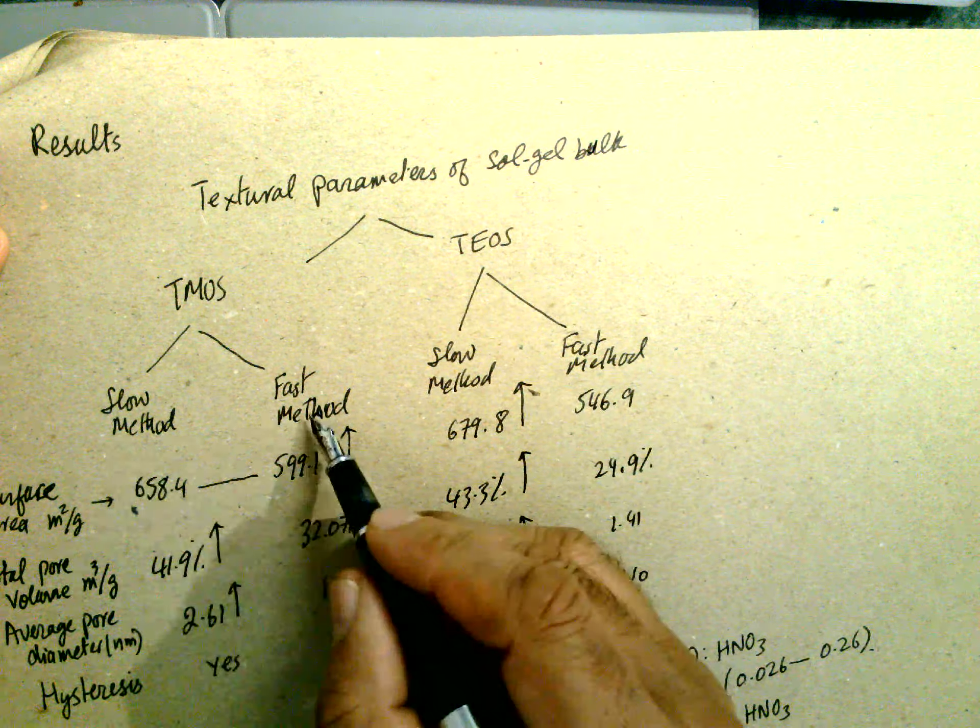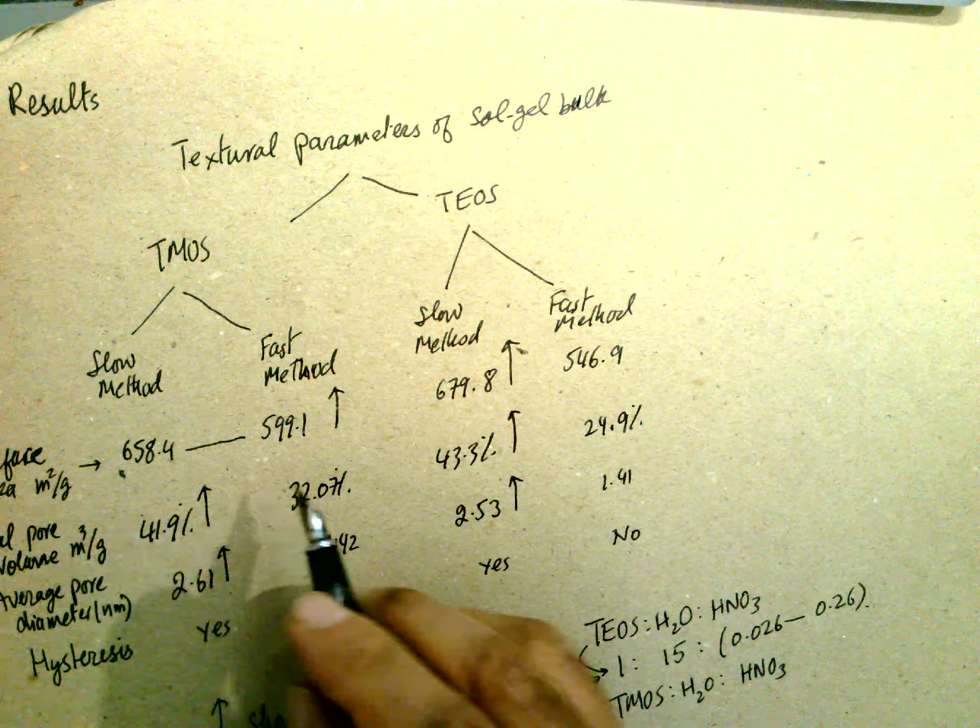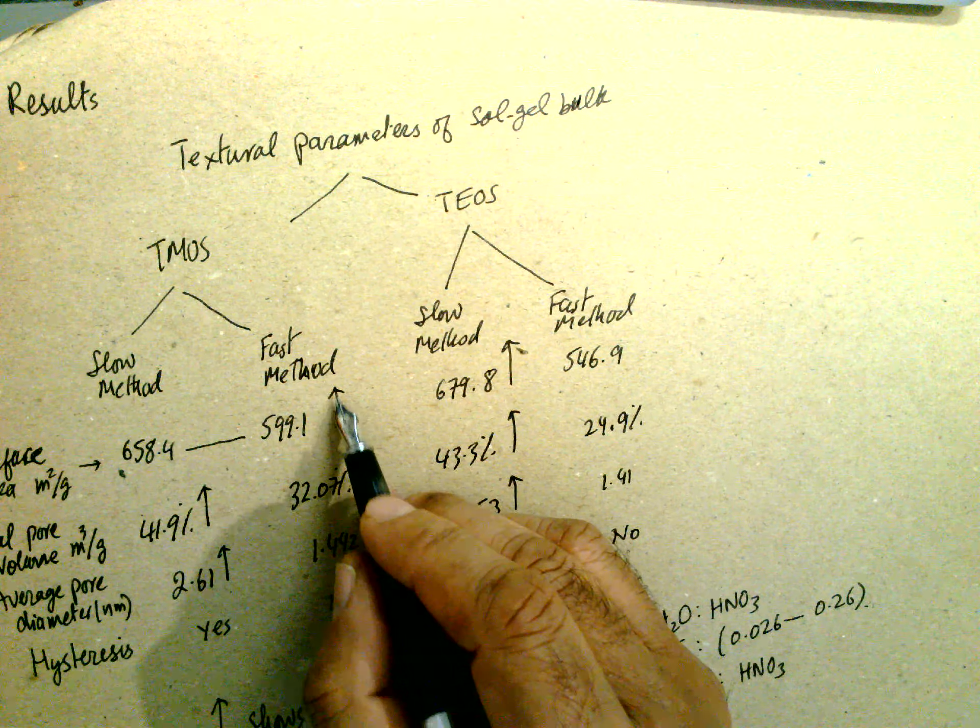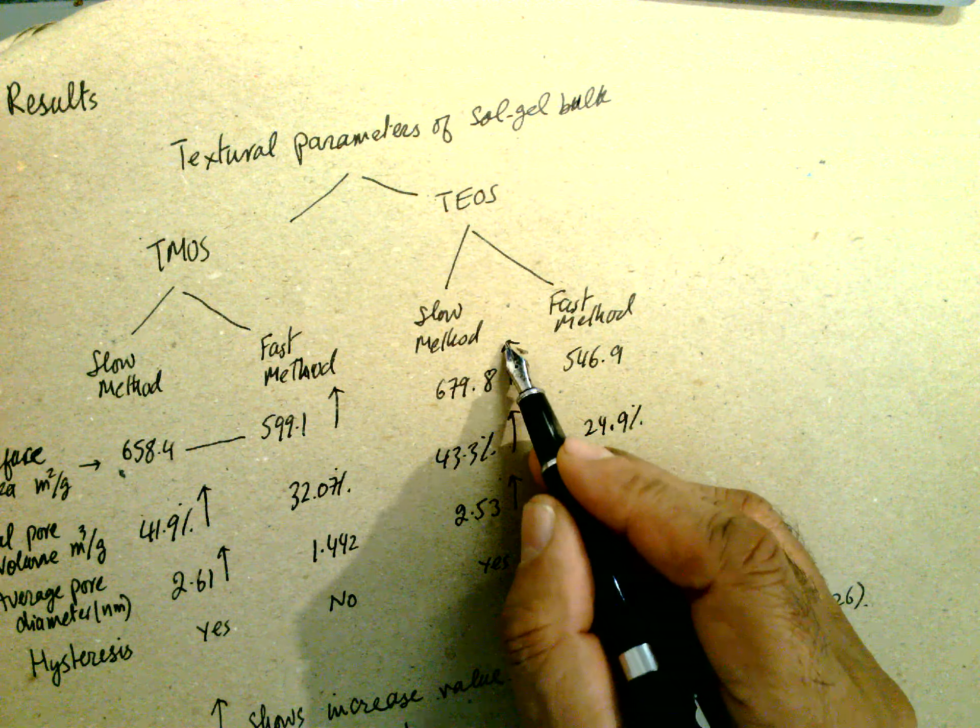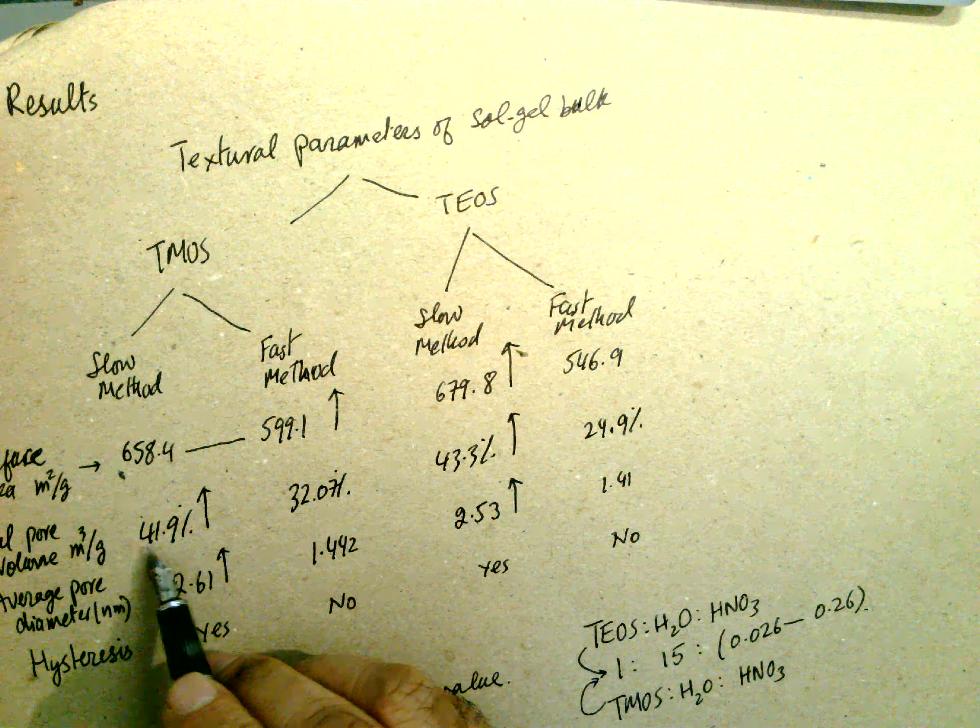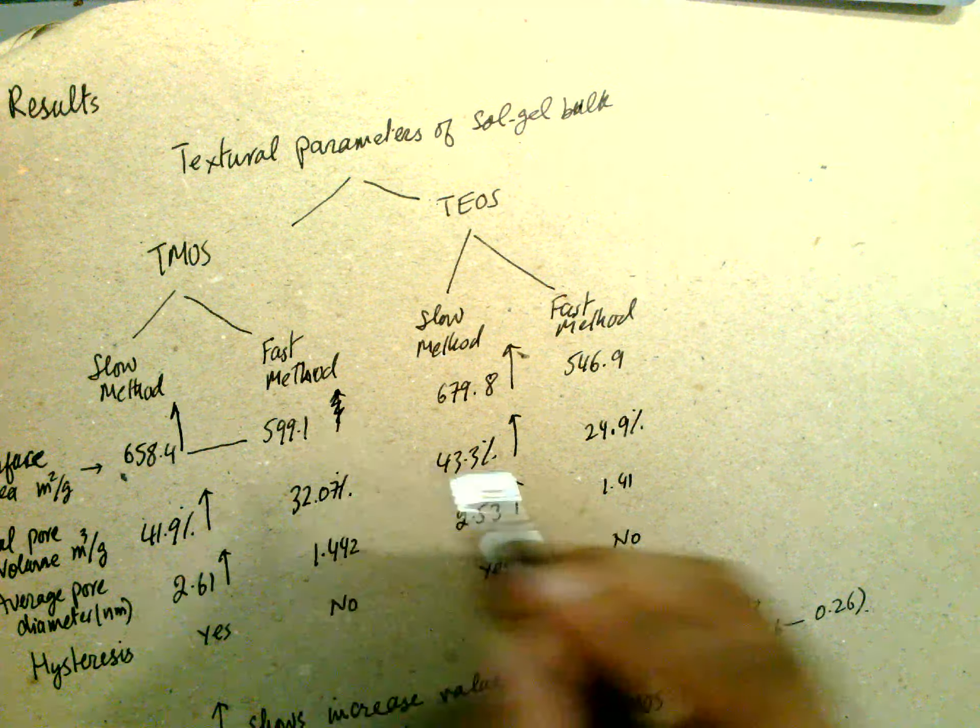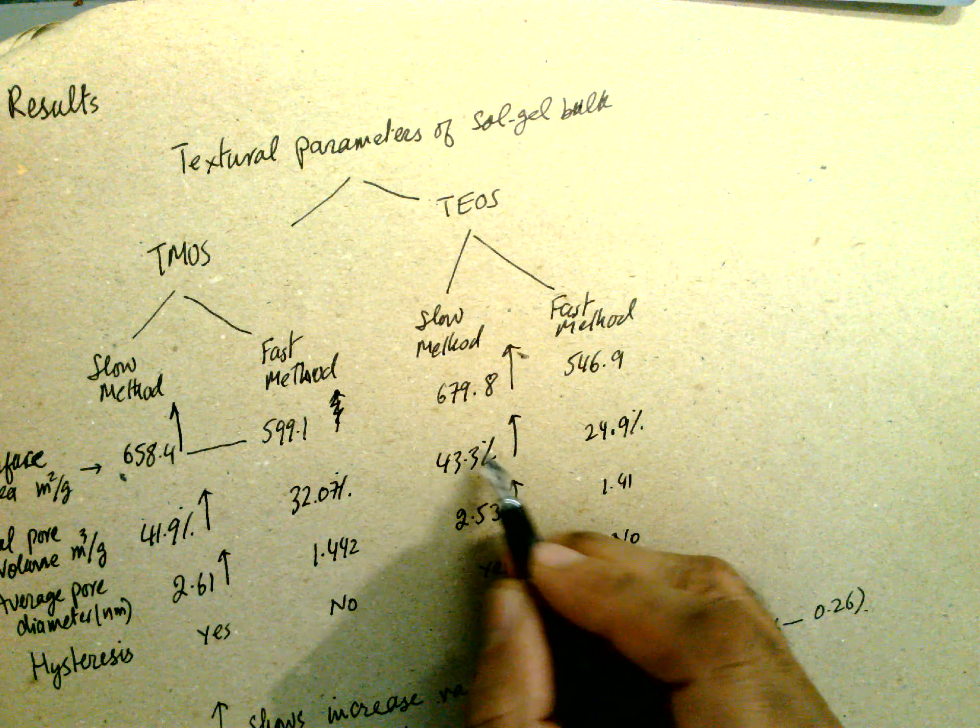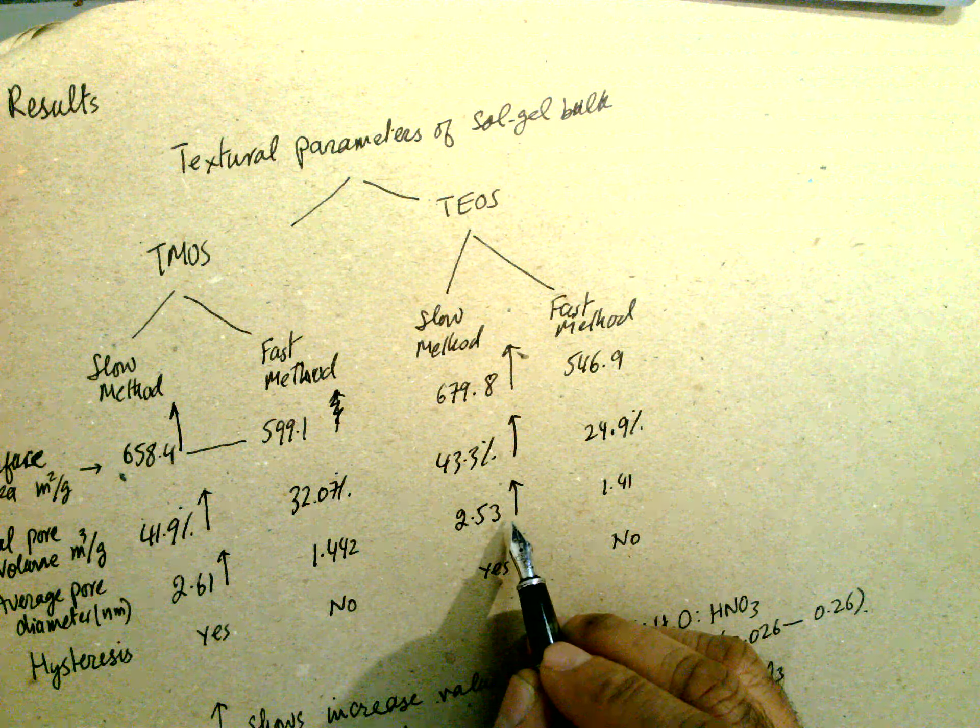Texture parameter of the sol-gel bulk: TMOS and TEOS, slow method, fast method. These are the data. There's a surface area. Surface area for this one is: fast method is more, and this one is lower. Slow method, it is larger. Total pore volume is 0.419, this is higher. In this one is TEOS, slower method is higher.